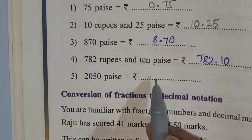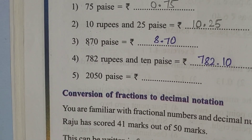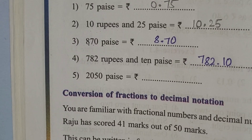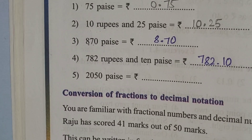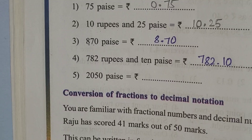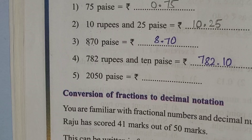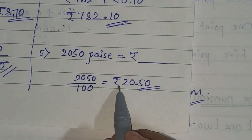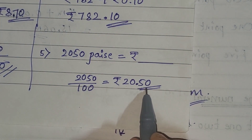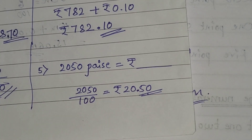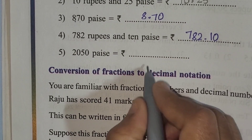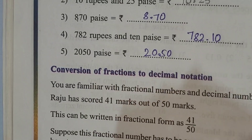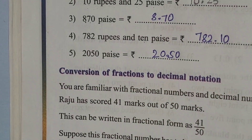The last one: 2050 paisa is equal to how many rupees? Pause the video and try to solve it yourself, then compare your answer with mine. If it is wrong, that is okay — just keep solving more problems and you will get perfect. The answer is rupees 20.50.